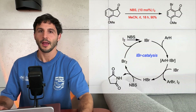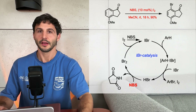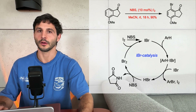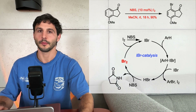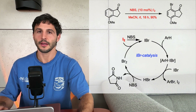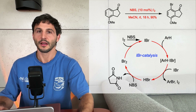Next, NBS reacts with hydrogen bromide via nucleophilic substitution, producing succinimide and bromine. The bromine can then react with another molecule of iodine to regenerate IBr, completing the catalytic cycle.